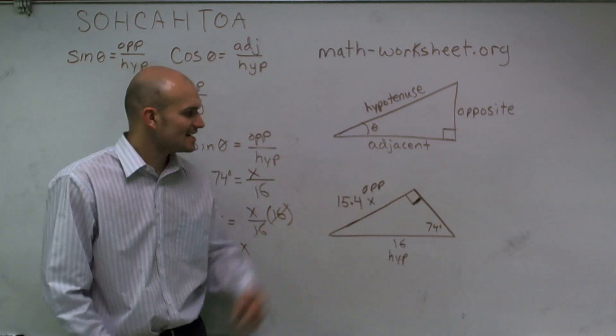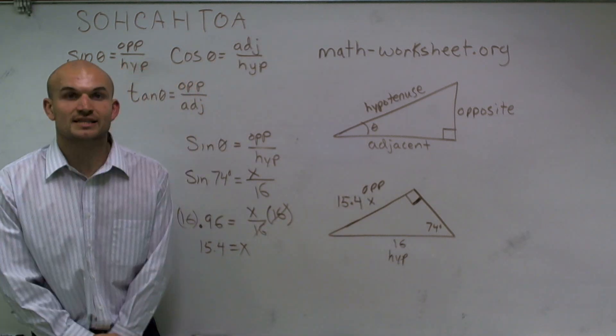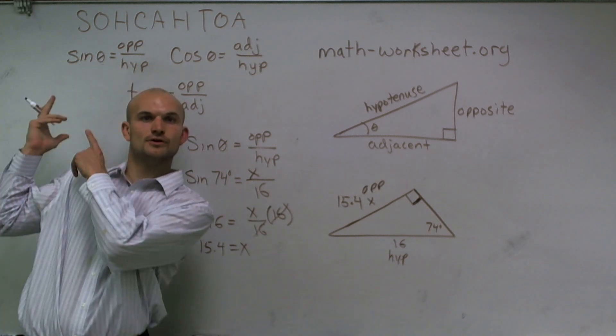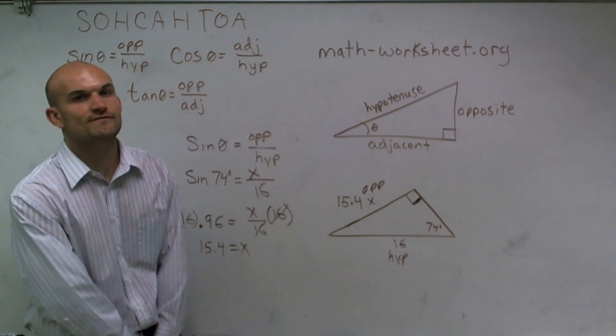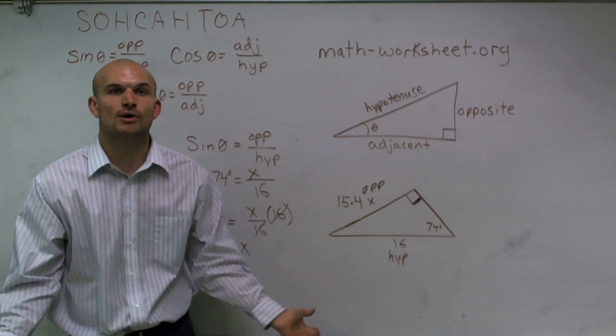That's how you solve for a missing length of a right triangle by using your trig functions. Please visit mathworksheet.org for more help. Thanks for watching.